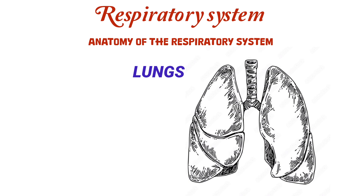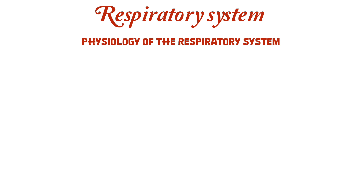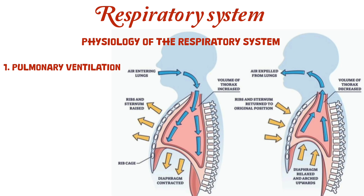The main function of the respiratory system is gas exchange, supplying oxygen to the blood and removing carbon dioxide. This is made possible by four key processes. Number one is pulmonary ventilation, which is breathing. Breathing consists of two phases: inspiration and expiration. During inspiration, the diaphragm contracts and flattens, and the external intercostal muscles lift the rib cage upwards and outwards.